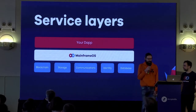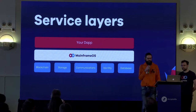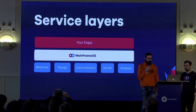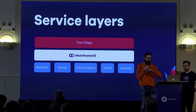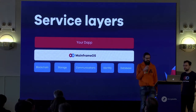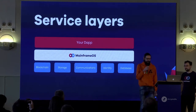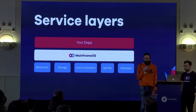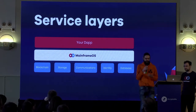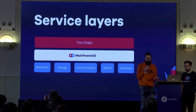This is what the Mainframe OS architecture looks like — it's a layer on top of what we call service layers, which could be blockchain, storage, or communications. Mainframe OS acts as a layer between these services and your DApp. One benefit for the developer is there's no need to evaluate: if a developer needs to integrate decentralized storage, typically they'd go and see all the options, try to evaluate them, and look at the technical considerations and market share of each project.